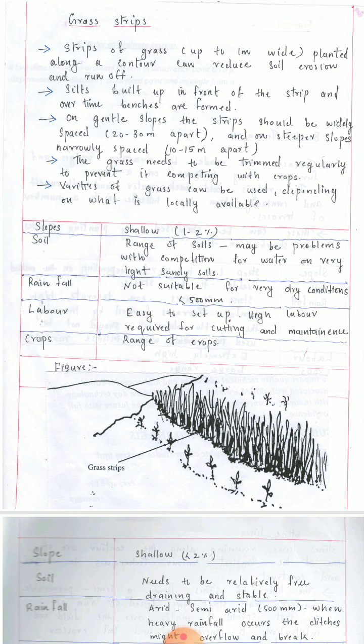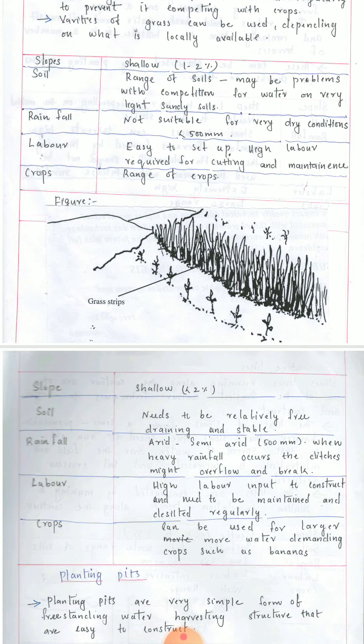The next method is grass strips. A strip of grass up to a certain width, planted along a contour, can reduce soil erosion and runoff. Simply covering the earth surface with grasses reduces soil erosion and maintains soil moisture. The slope should be shallow, from 1 to 2 percent. There may be problems with competition for water on very light sandy soils. Rainfall should not be less than 500 millimeters — not suitable for very dry conditions. Labour is easy to set up but high labour is required for cutting and maintenance. The image shows the grass strips where a strip of grass is cultivated along the contour.